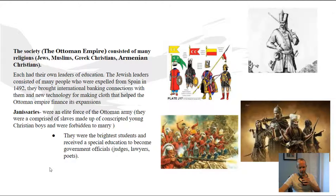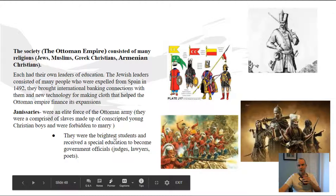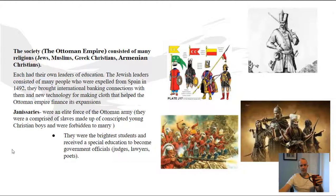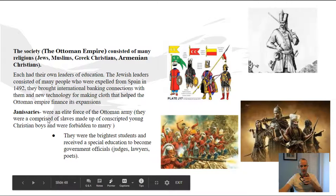The Janissaries were the elite force of the Ottoman army. They were comprised of slaves made up of conscripted young Christian boys who were forbidden to marry. The brightest students received special education to become government officials, judges, lawyers, and poets — creating an intellectually thriving society, though the means of doing so were morally questionable. It became a very powerful empire because of these laws and structures. Janissaries is one of those words that would pop up in your AP exam. The end of the Ottoman Empire came in the 1700s as European advances, Russia, and other powers captured Ottoman lands.